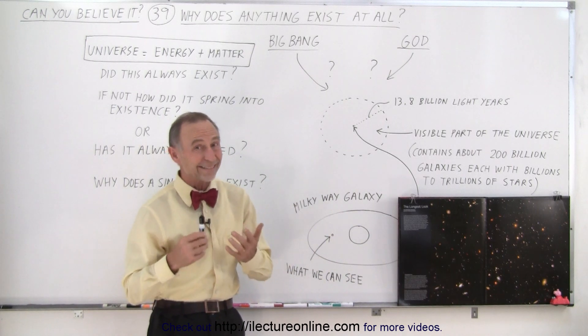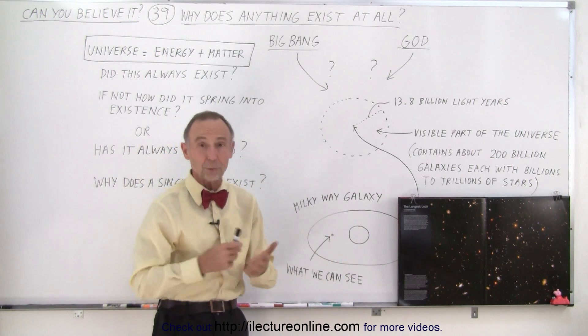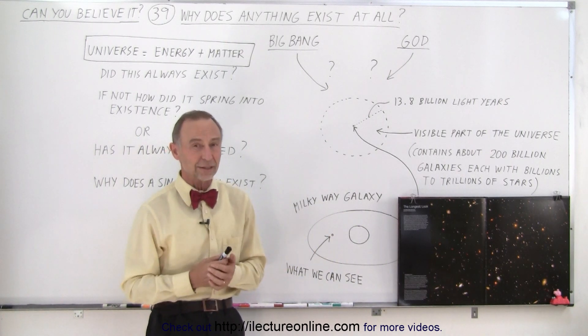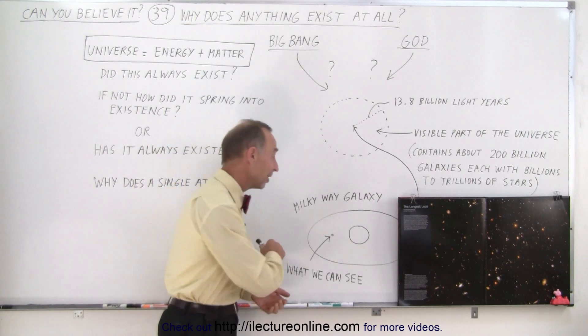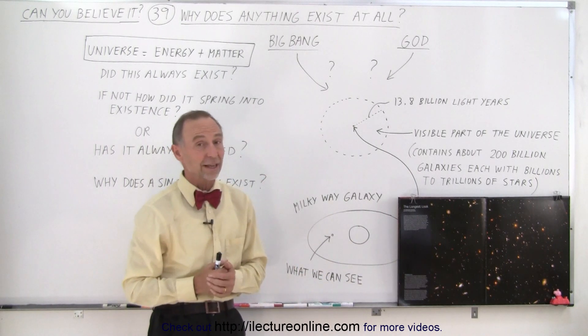And light travels at 186,000 miles every second, or 300,000 kilometers per second. At that enormous speed, it takes 100,000 years for light to travel across the galaxy.